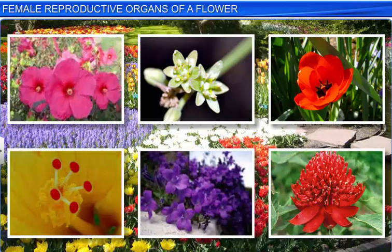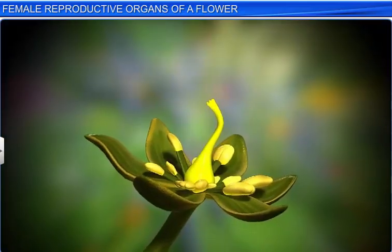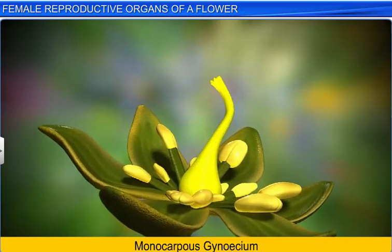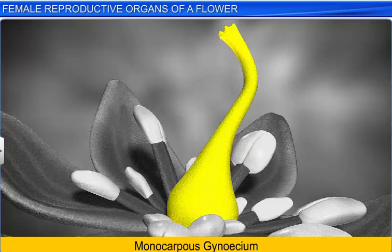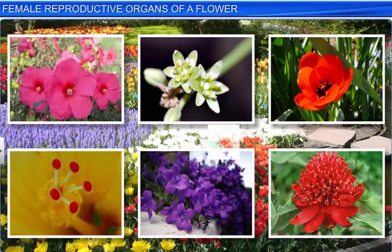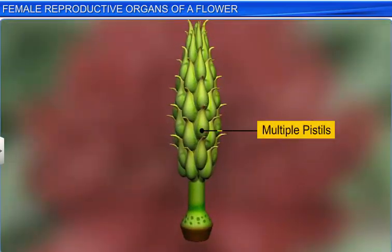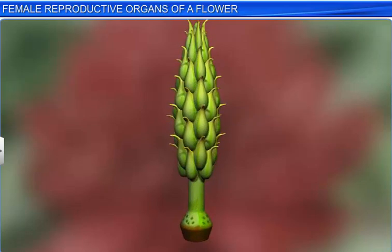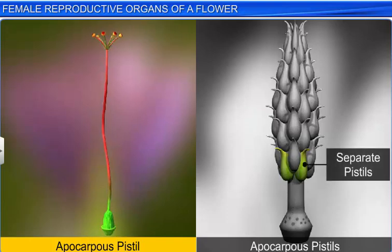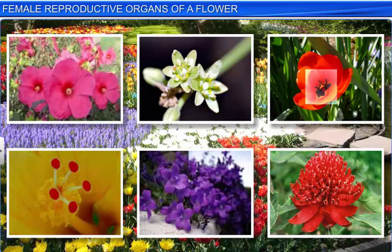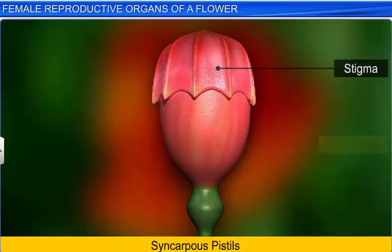You can see many variations in the gynoecium of different flowers. For example, the gynoecium can be monocarpous, consisting of a single pistil or carpel. Or it may be multicarpous, in which case we see several pistils in a single flower. Moreover, a multicarpellary gynoecium may be apocarpous — that is, the pistils are free — or syncarpous, where the pistils are fused.